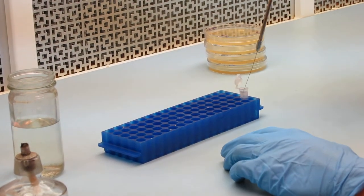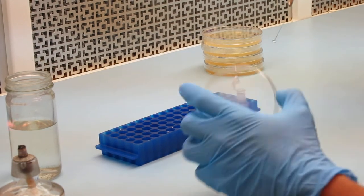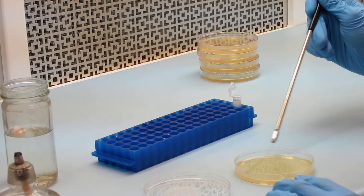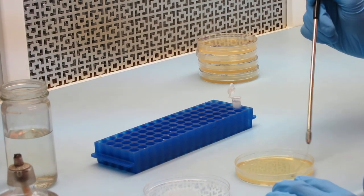You will then take a loop full of your bacterial suspension and put it on your plate. And you're going to do this in a one-half, one-quarter, one-quarter fashion. So you'll start by streaking out one half of the plate.